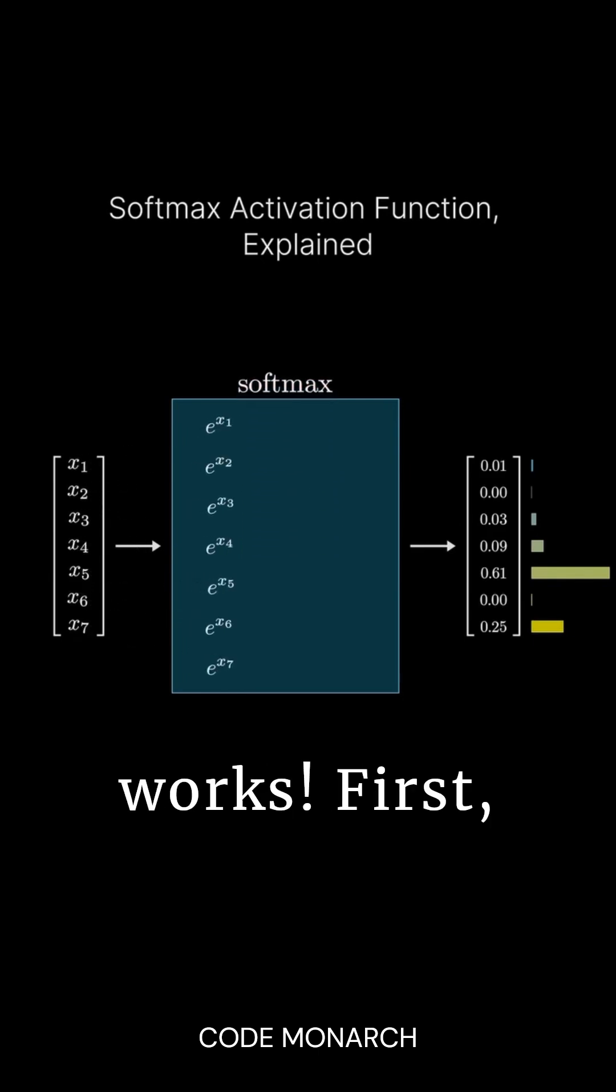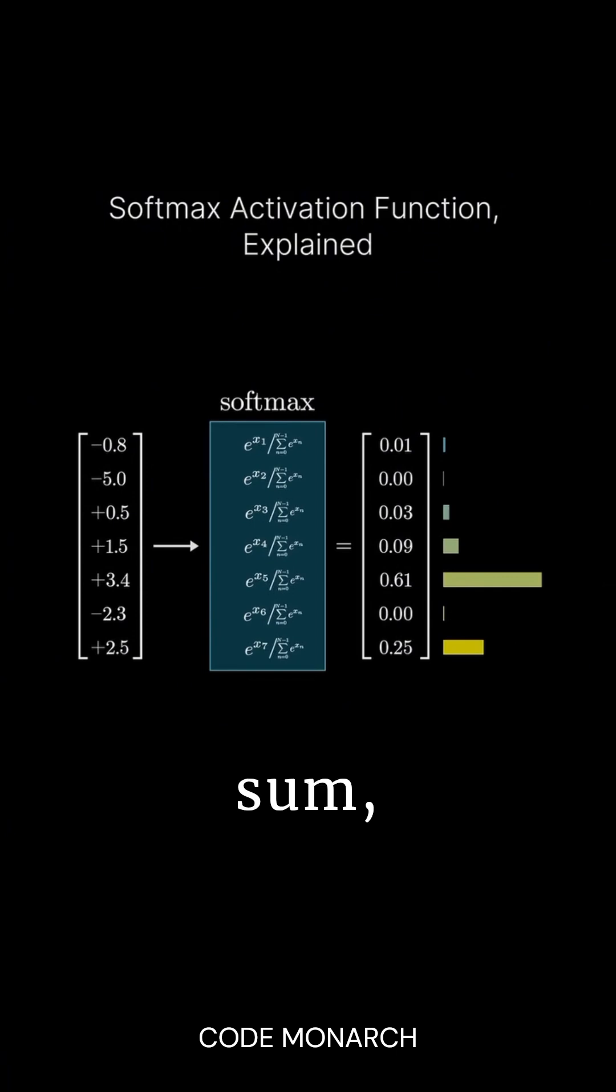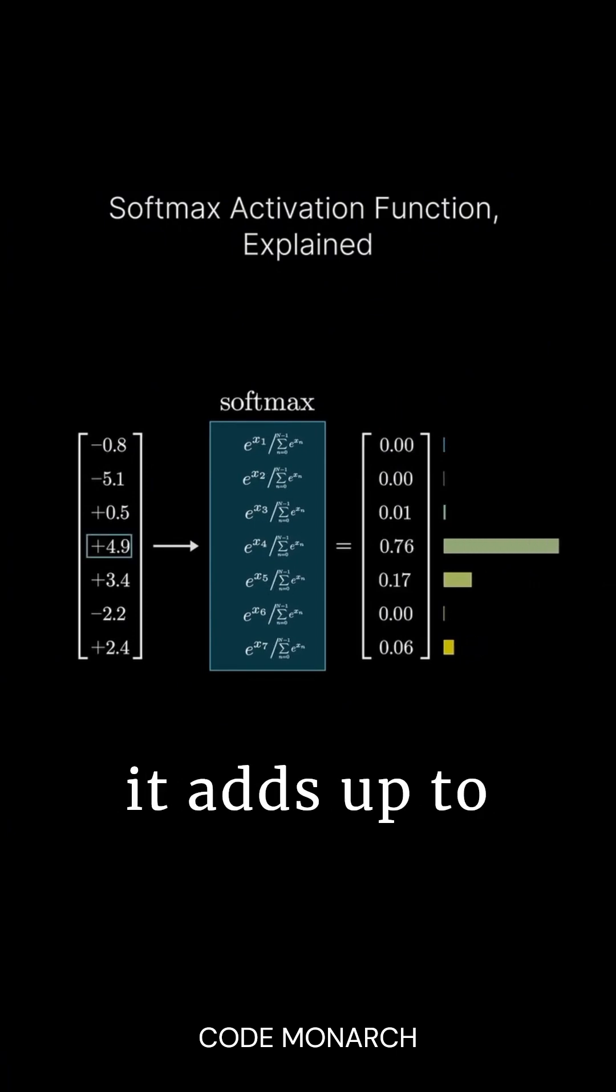Here's how softmax activation works. First, we raise e to the power of each input number, creating a list of positive values. Then, we sum these values and divide each term by that sum, normalizing the output so it adds up to 1.